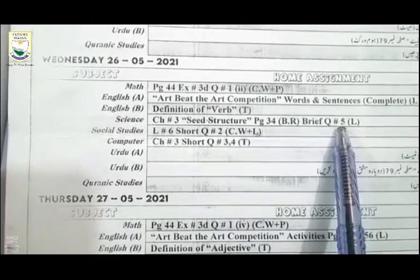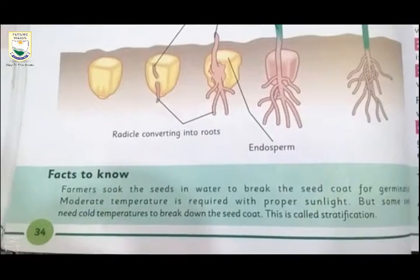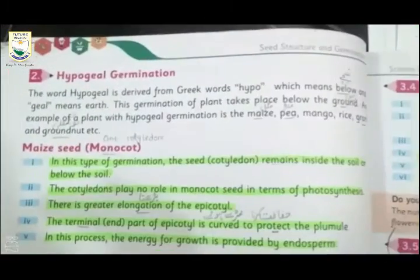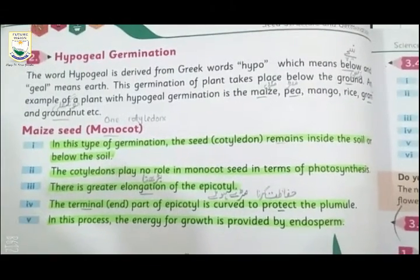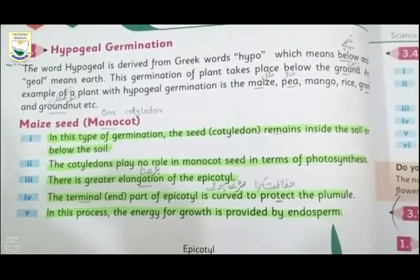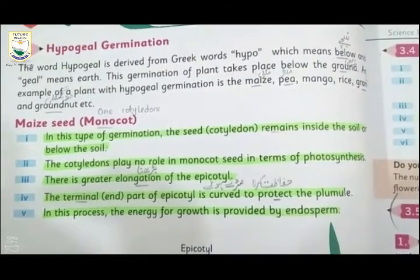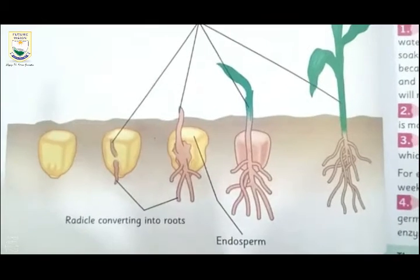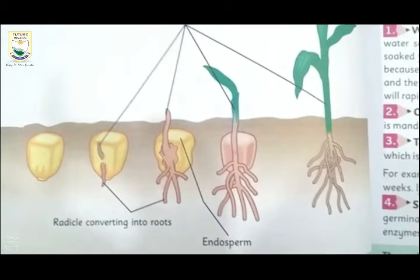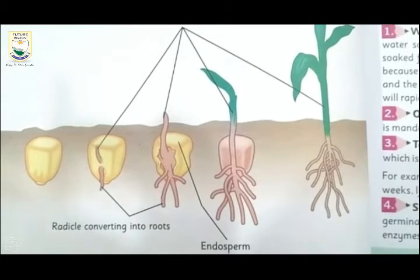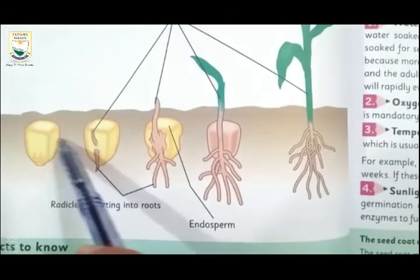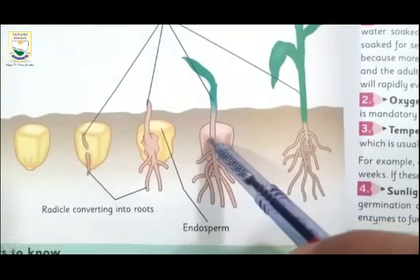کل ہم نے اس کا سیوک کیا تھا. آج آپ نے اس کو Learn کرنا ہے. Students, Page No. 34 Open کریں Book کا. Topic ہے ہمارا Hypogeal Germination. اس میں Seed Below the Ground، زمین کے نیچے ہی رہتا ہے اور وہیں Germinate کرتا ہے. آپ دیکھ سکتے ہیں Seed زمین کے اندر ہی ہے، باہر کی طرف نہیں آیا. باہر صرف Plant کی Growth ہوئی ہے.